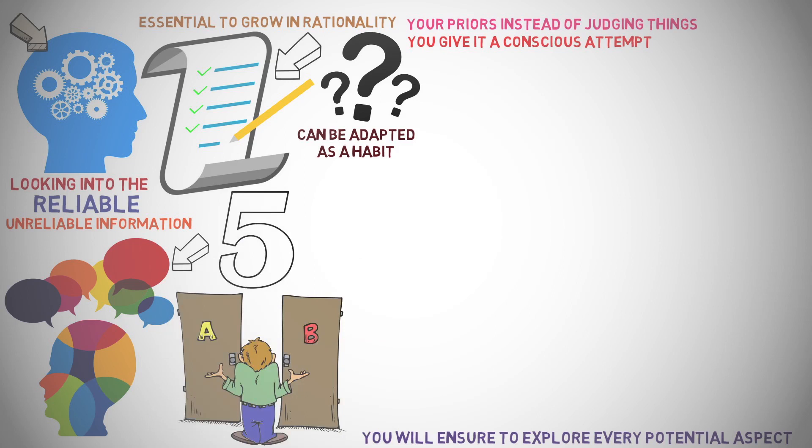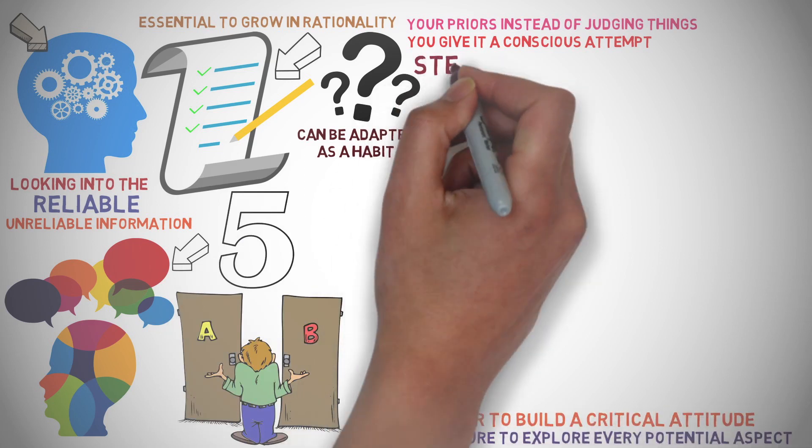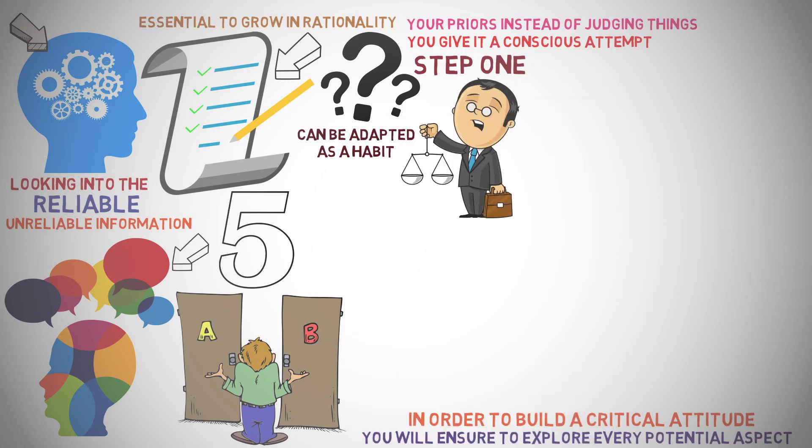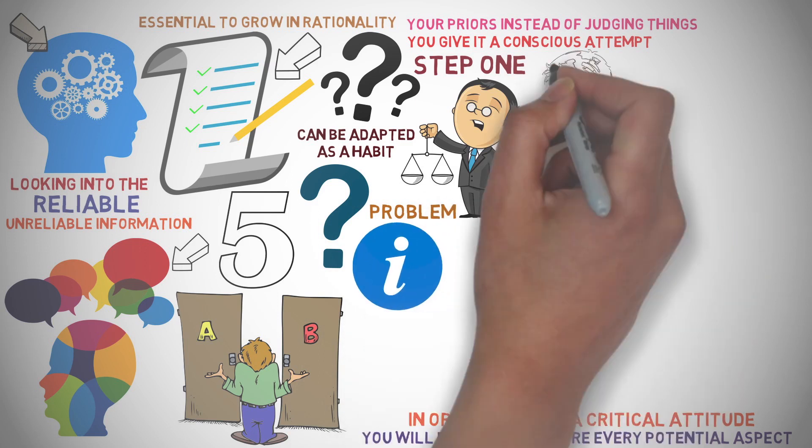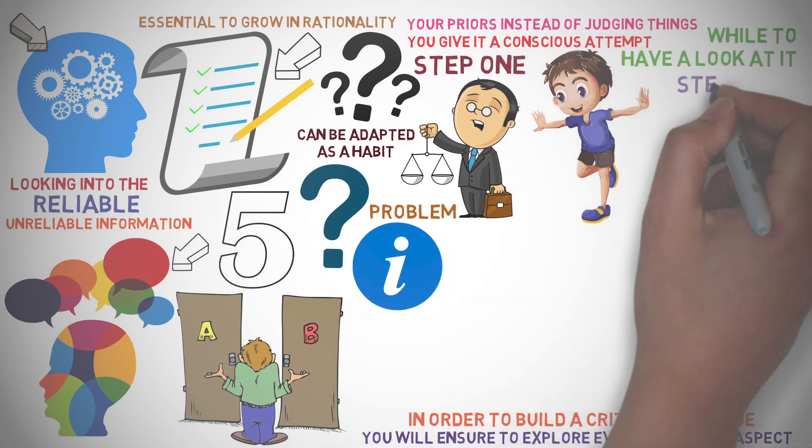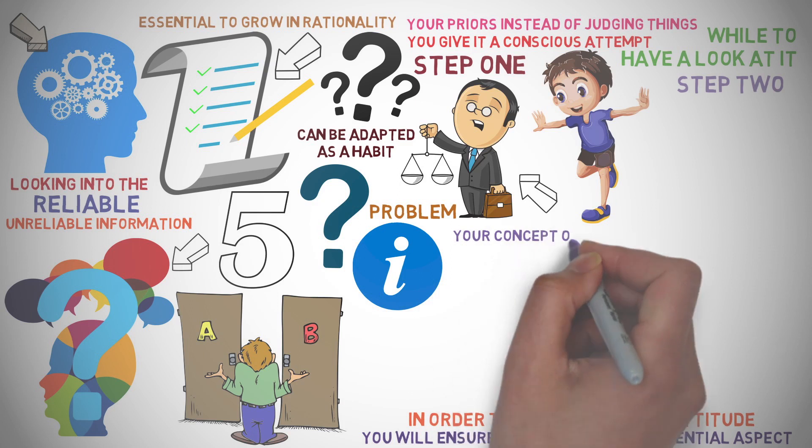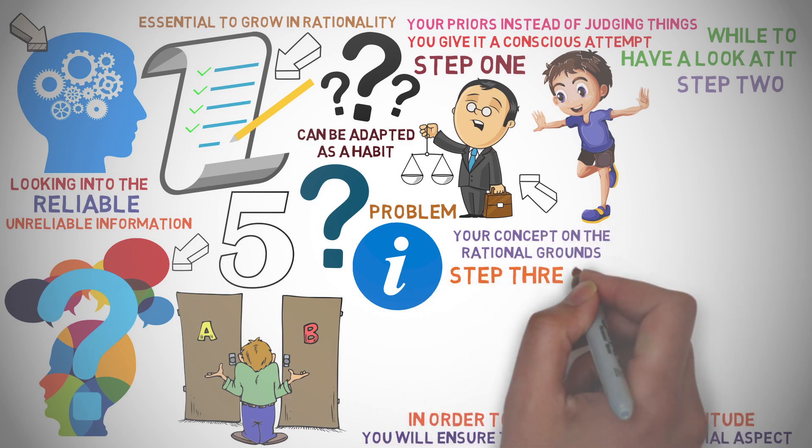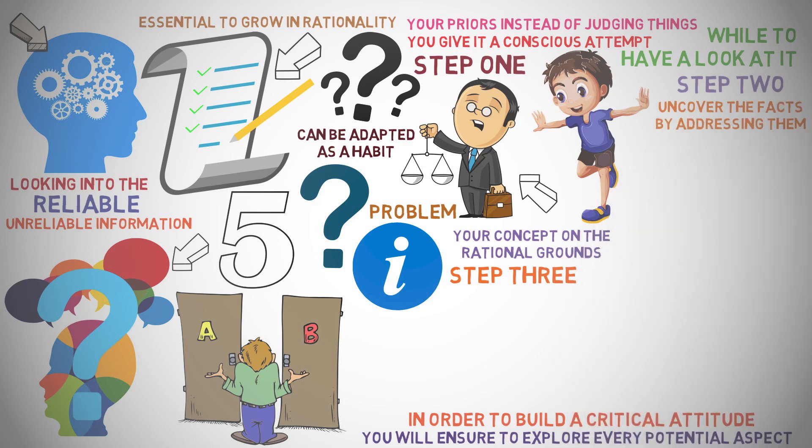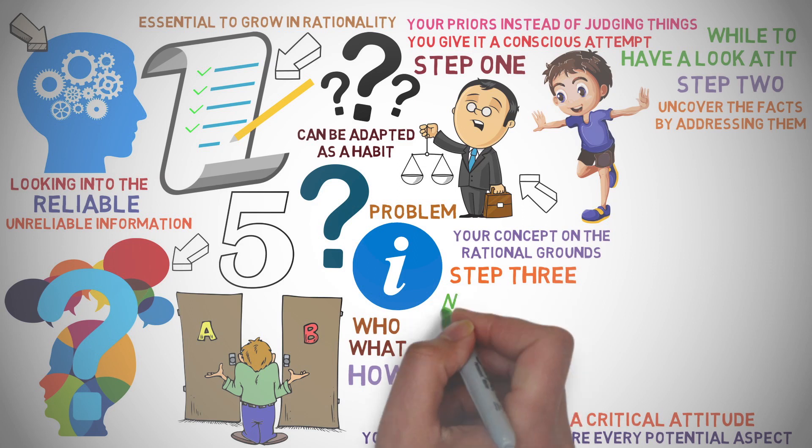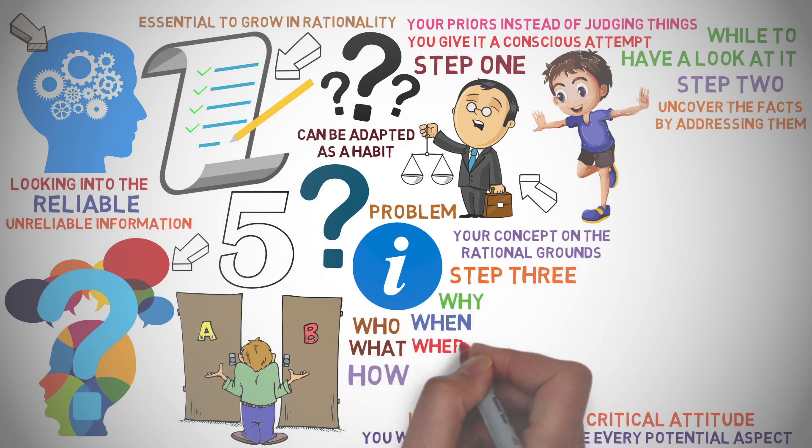The following 5 steps are suggested to be practiced in order to build a critical attitude. Step 1. Suspend judgment every time you come across some new question, problem, or information and pause for a while to have a look at it. Step 2. Question assumptions after having suspended your judgment to clarify your concept on the rational grounds. Step 3. Uncover the facts by addressing them through traditional method of questioning with who, what, how, why, when, where, etc.